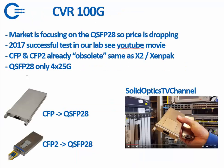Another important trend for 100 gig is that the CFP and CFP2 are getting obsolete. Marketing is focusing on QSFP28, so the price is dropping a lot. For CFP and CFP2 we are offering converters — electronic converters, similar to the XENPAK and X2. Factories don't want to invest in all platforms and everybody's focusing on QSFP28. You can see a demonstration on the Solid Optics TV YouTube channel on the CFP and CFP2 converter.